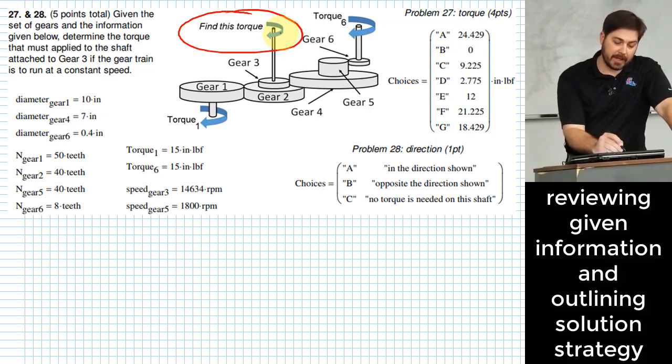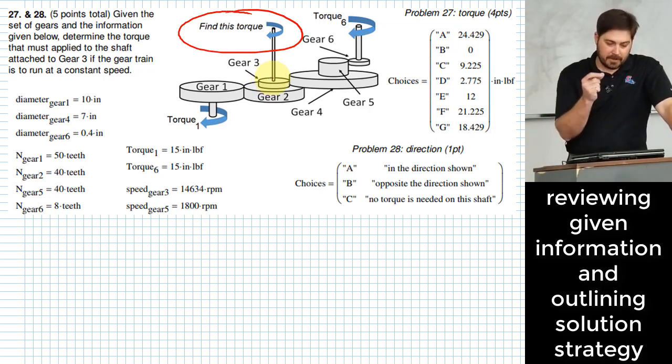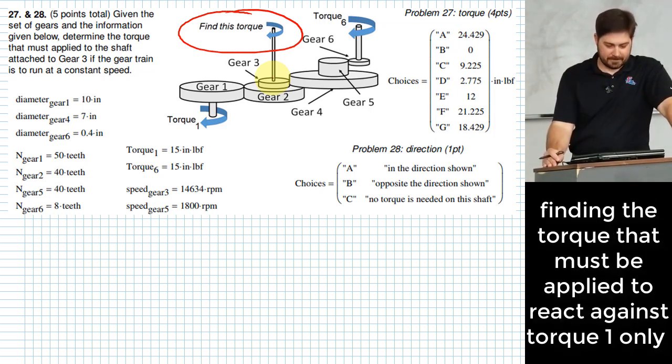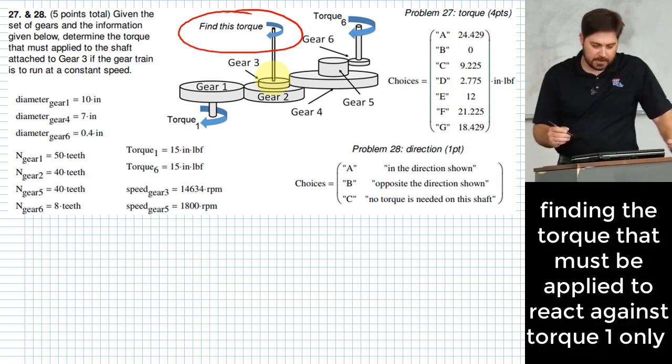To that, I will add the other factor, which is torque six over here. That is also going to have an effect on how much torque I need to apply on this middle one. If I find those two separately, then I can add them together and I can determine how much torque I need to apply to bring it to equilibrium. So which side do you want to start on first? It doesn't matter to me. Okay. We'll start maybe on the left side first.